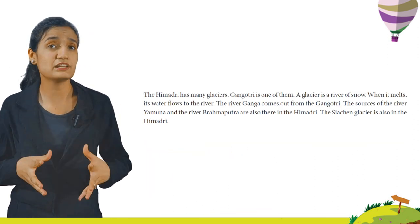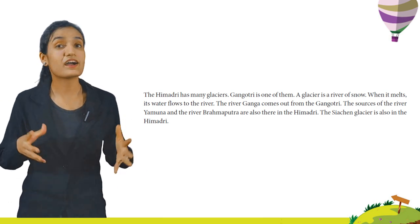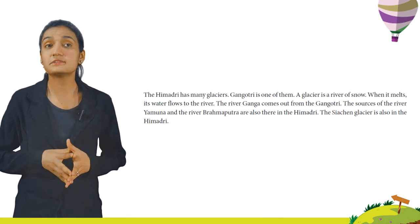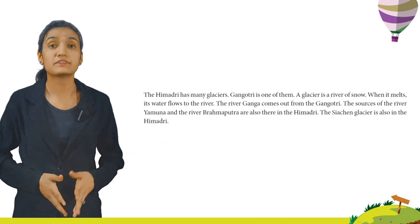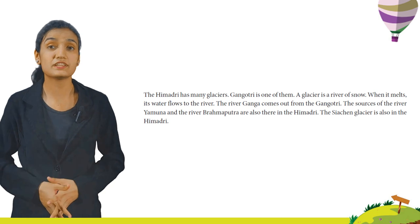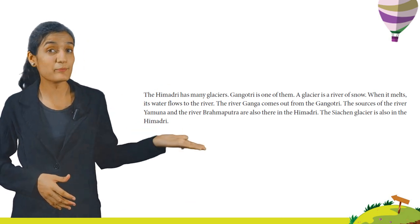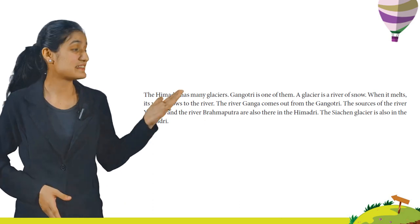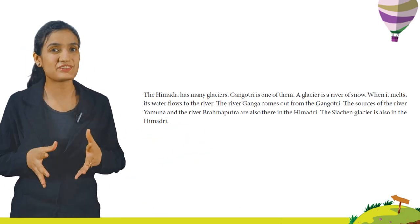The Himadri has many glaciers. Gangotri is one of them. A glacier is a river of snow. When it melts, its water flows to the river. The river Ganga comes out of the Gangotri. The sources of the river Yamuna and the river Brahmaputra are also there in the Himadri. The Siachen Glacier is also in the Himadri.